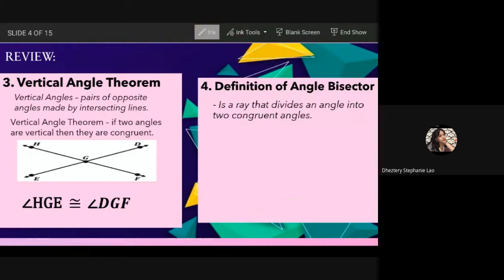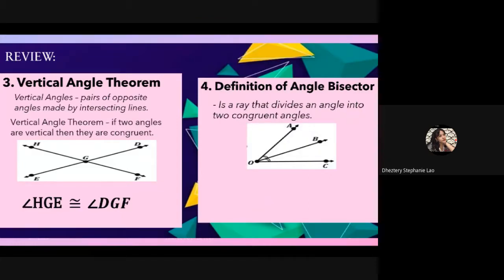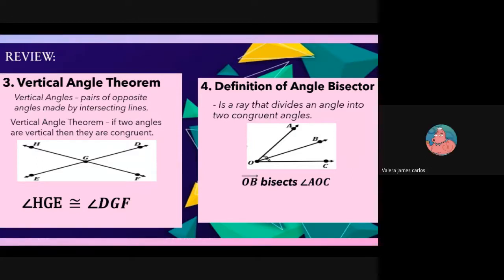We have angle AOC as the largest angle. Ray OB bisects angle AOC, dividing it. From this figure, Valera answers: angle AOB is congruent to angle COB.